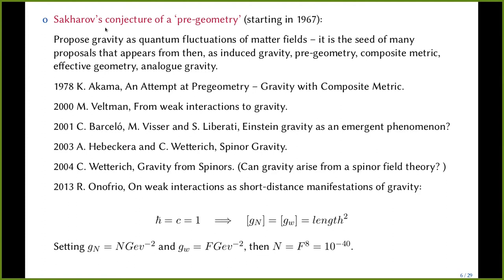The last direction I would like to comment on is the Sakharov conjecture. For Sakharov, gravitation could be thought of as quantum fluctuations of matter fields, and it is the seed for proposals like induced gravity, pre-geometry, composite metrics, effective geometries, and more recently, analog gravity. All these four directions are related in a certain sense to our proposal. The first problem concerns the intrinsic dynamical metric in general relativity, which is not unique. As a question we could state: is the metric the only way to implement the equivalence principle?